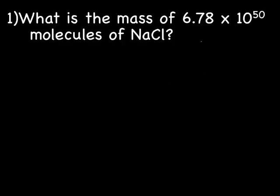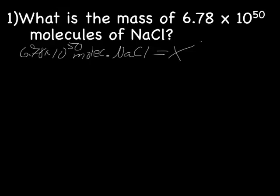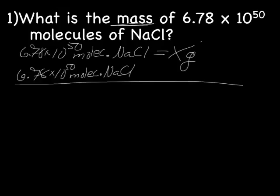What is the mass of 6.78 times 10 to the 50th molecules of NaCl? So we'll start by writing our math problem: 6.78 times 10 to the 50th molecules NaCl equals X, and we're looking for mass, which is grams. 6.78 times 10 to the 50th molecules NaCl over 1.